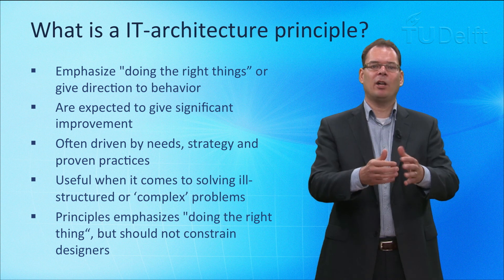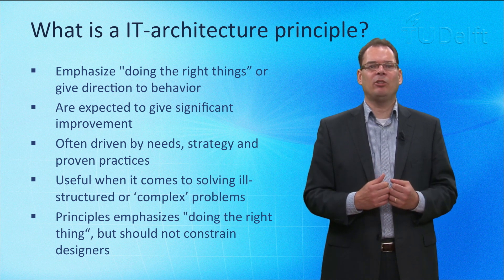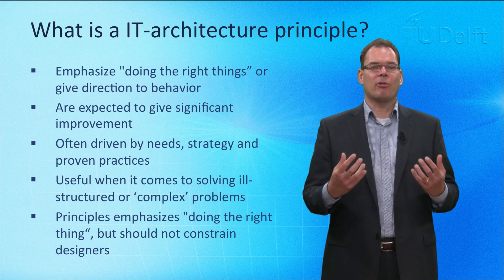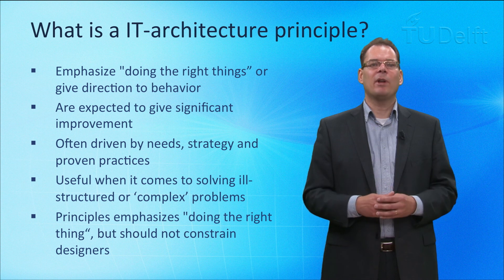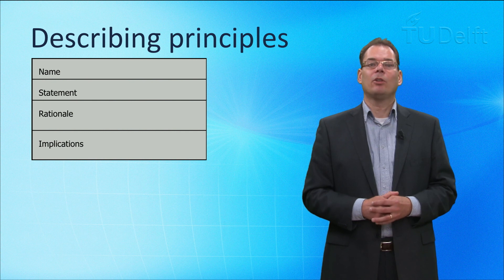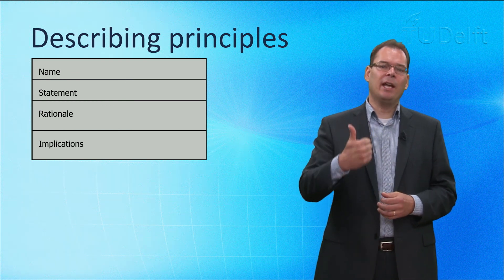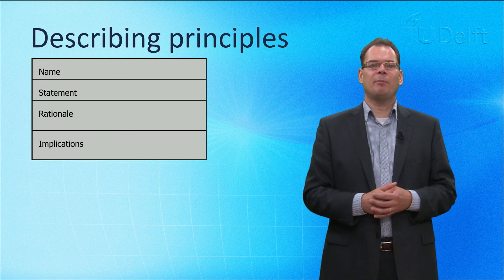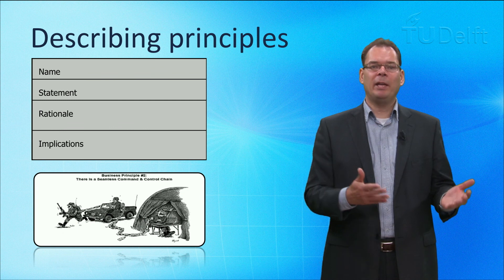We can use principles to give direction to architecture developments. Principles are useful when it comes to solving ill-structured or complex problems. The Open Group have defined design principles as general rules and guidelines that are intended to be enduring and seldom amended, that inform and support the way in which an organization sets about fulfilling its mission. Principles are heuristics or rules of thumb — they guide actions and are meant to direct. Principles are often normative or prescriptive in nature and emphasize doing the right things. The Open Group architecture forum provides templates for describing principles, where principles are described by a name, a statement, a brief explanation of its rationale and the implications of following the principle. A principle will be easier accepted and remembered if you explain why it is relevant and what benefits it might bring — that's why principles are sometimes illustrated by a picture to show the essence.